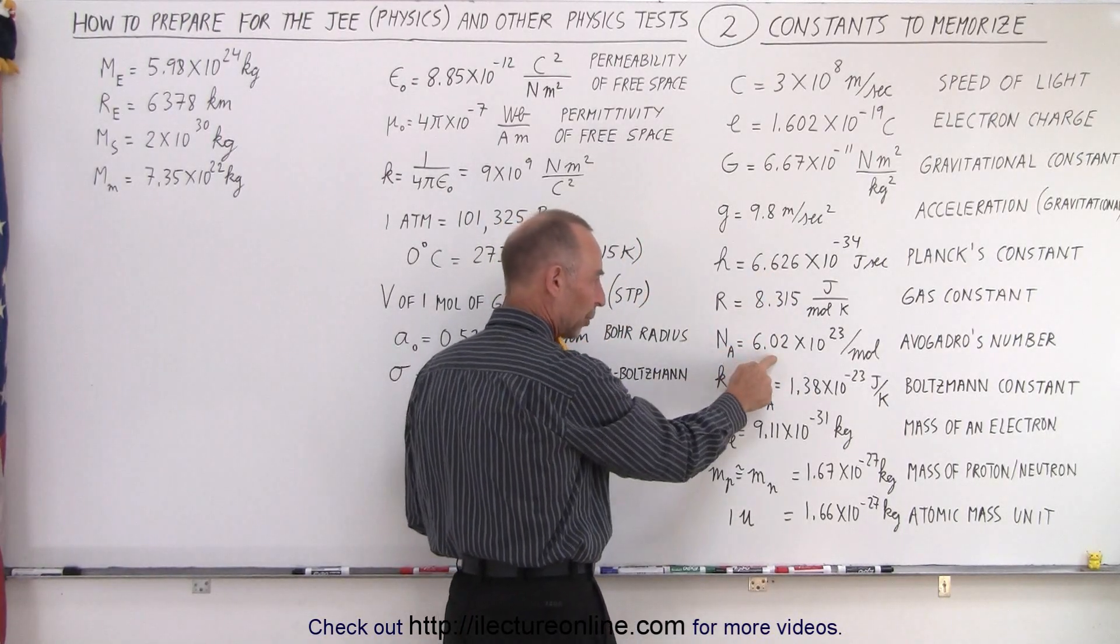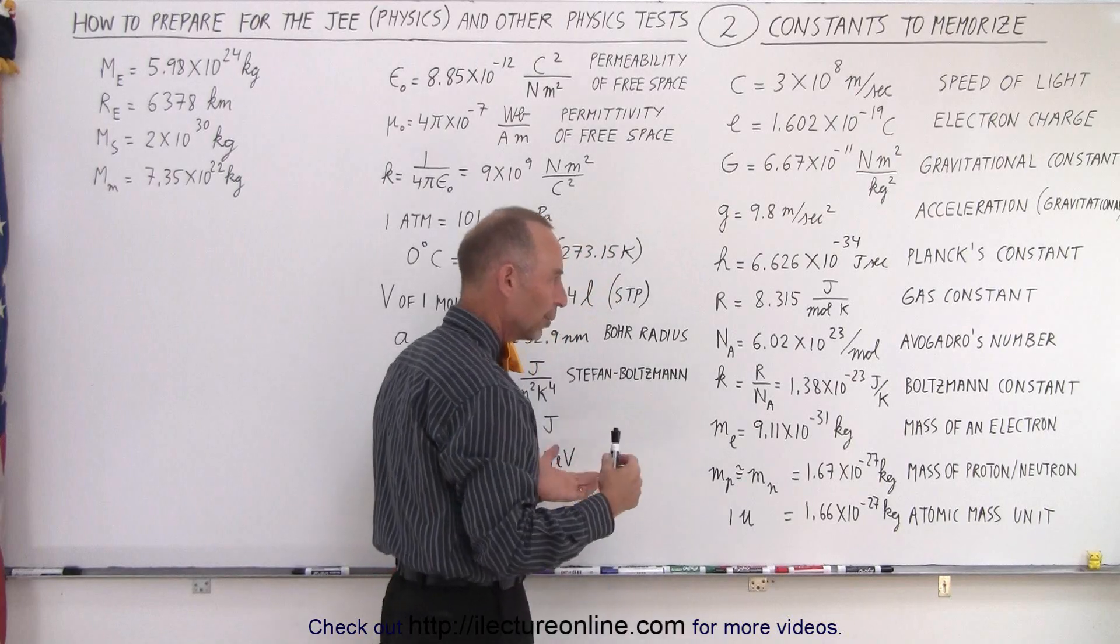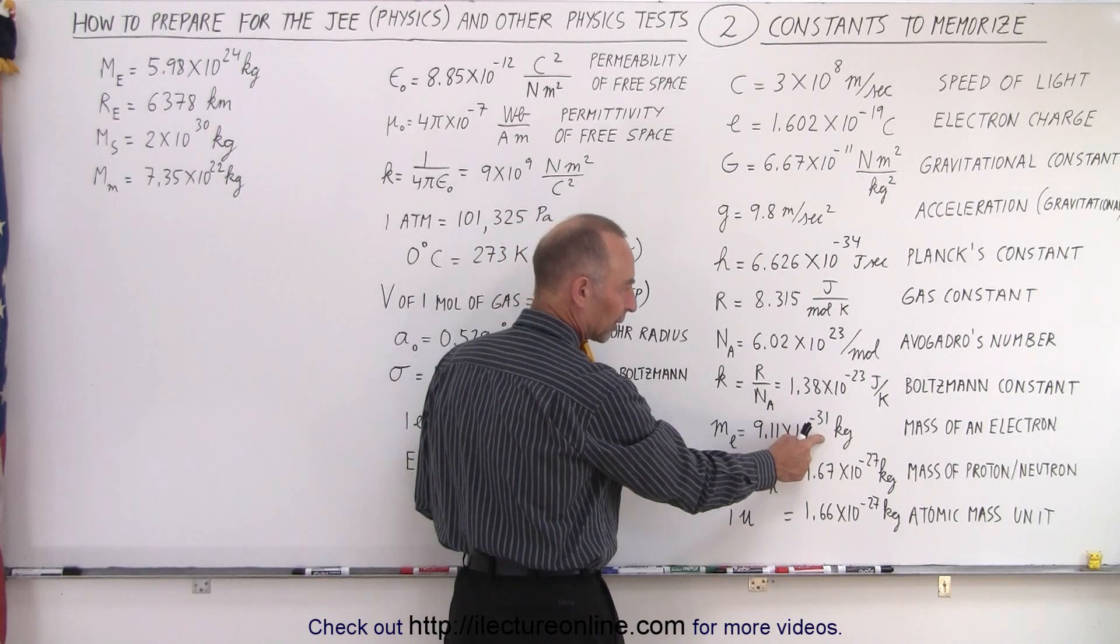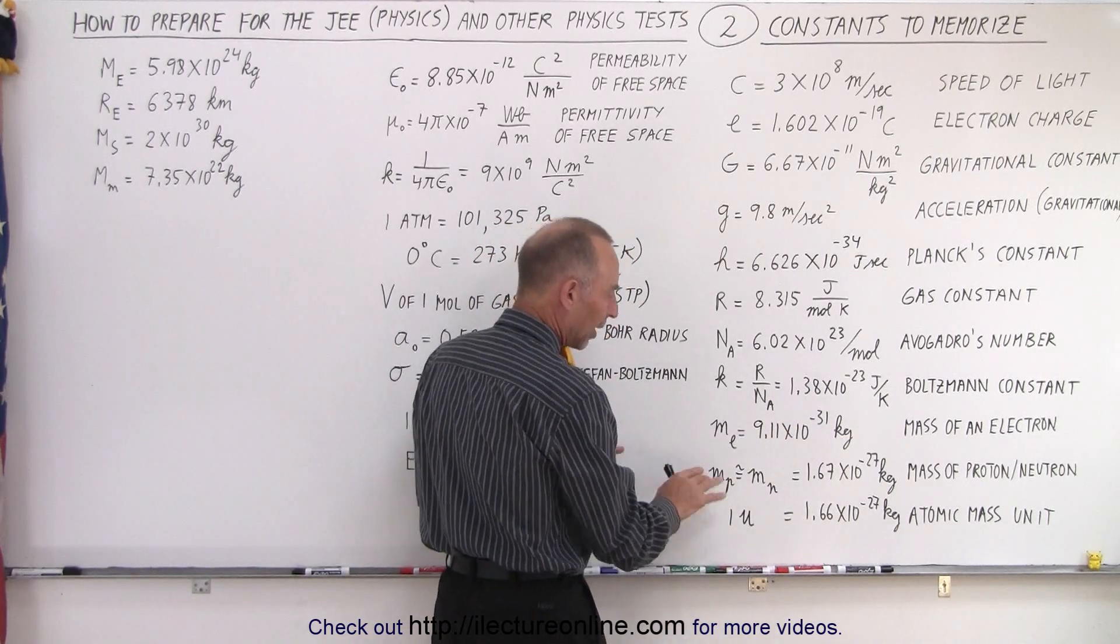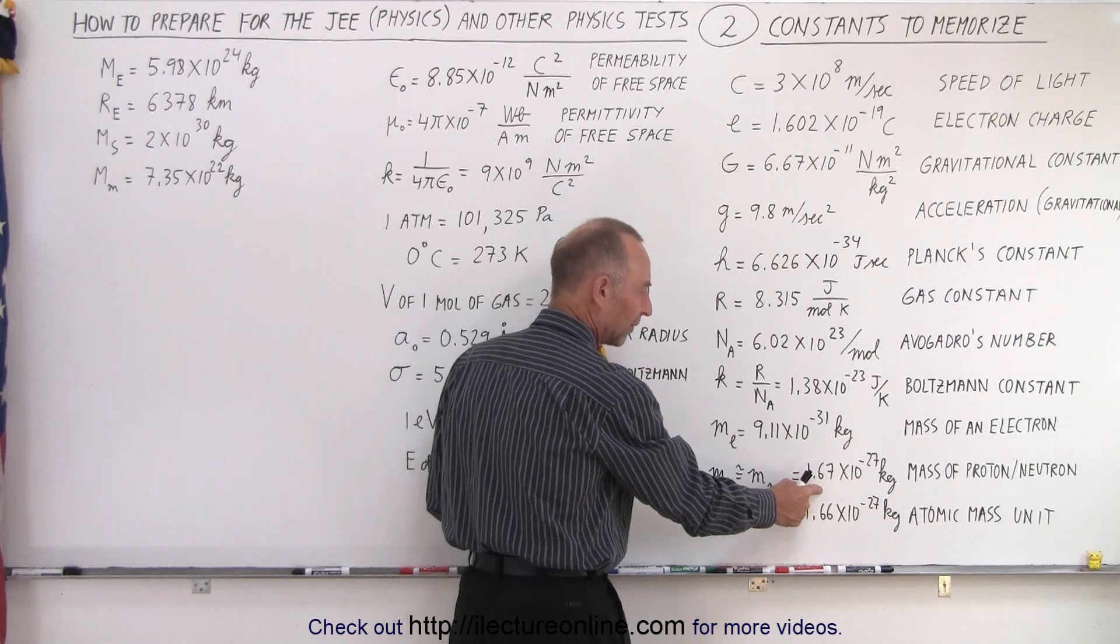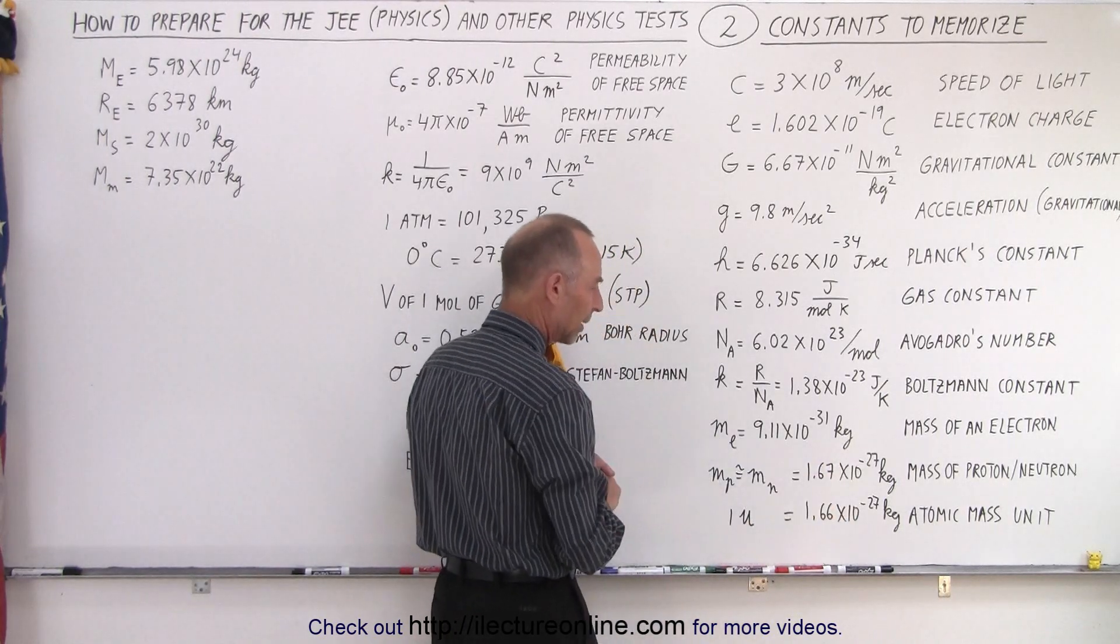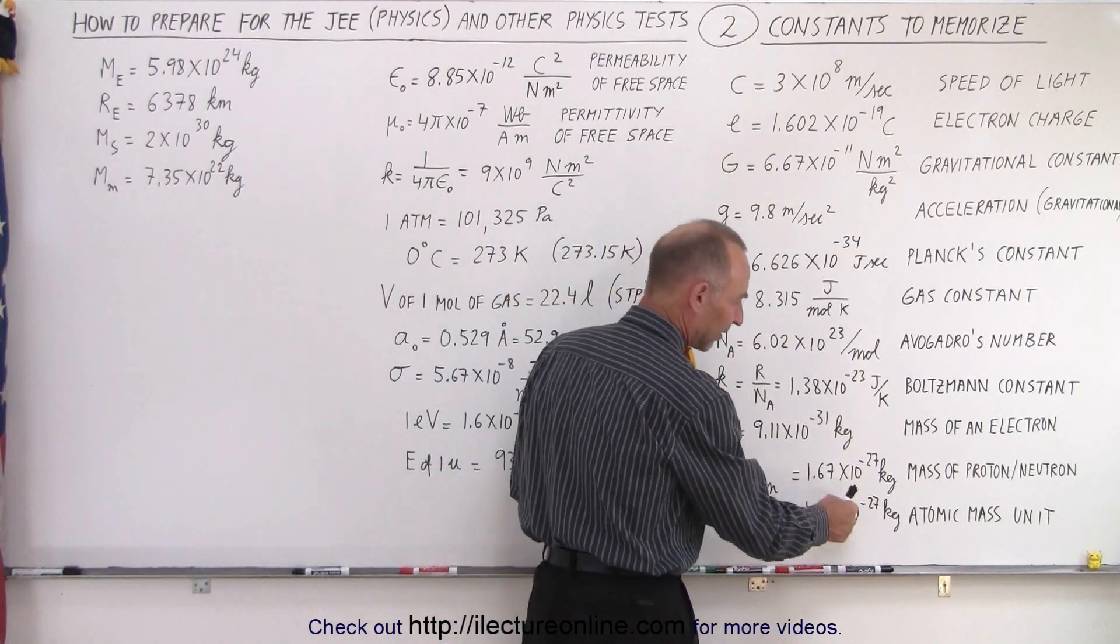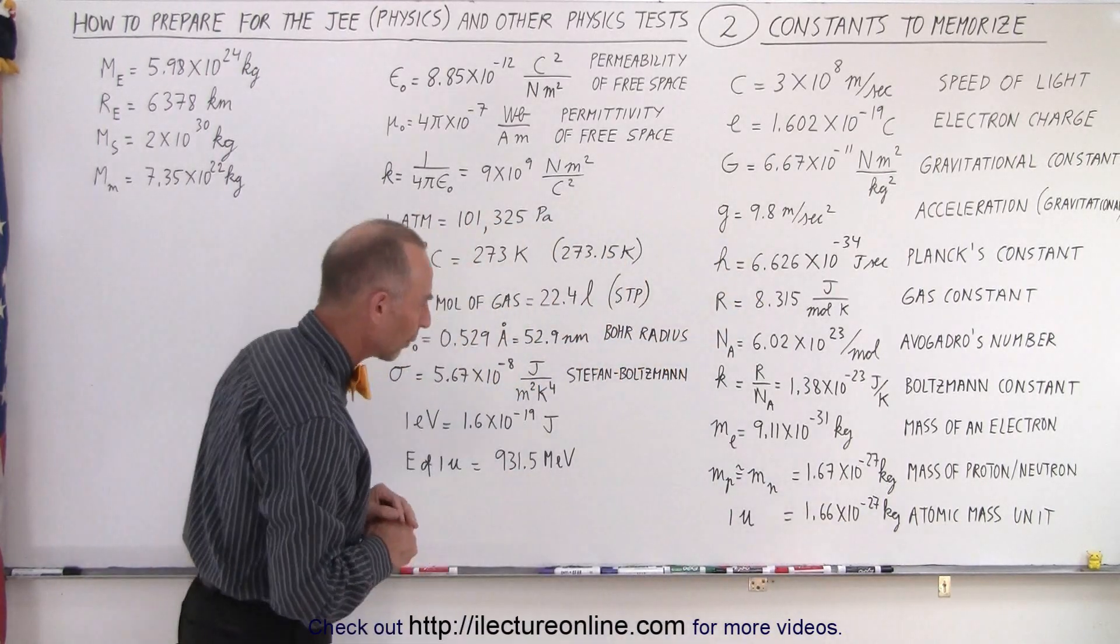Avogadro's number is 6.02 times 10 to the 23 per mole. We have the mass of an electron, 9.11 times 10 to the minus 31 kilograms. The mass of a proton, which is approximately equal to the mass of a neutron, at 1.67 times 10 to the minus 27 kilograms. And then a single atomic mass unit, at 1.66 times 10 to the minus 27 kilograms.